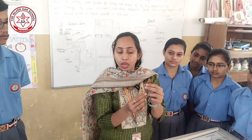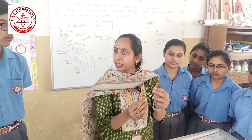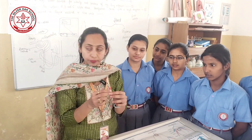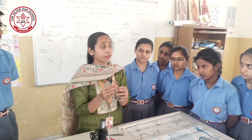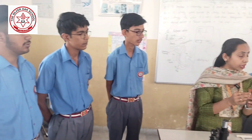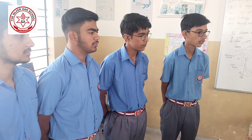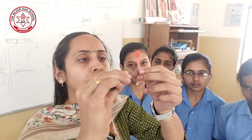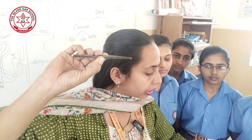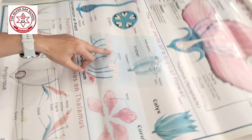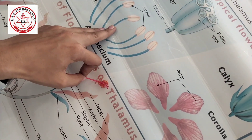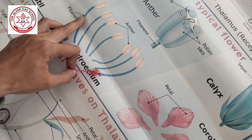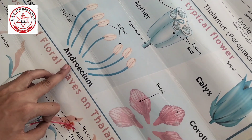When a flower consists of two reproductive gametes — male and female — it is known as a bisexual flower. The male reproductive system in a flower is known as stamen. A male reproductive part consists of the anther and filament. One anther and filament together is known as a stamen, and a group of many stamens together is known as androecium.